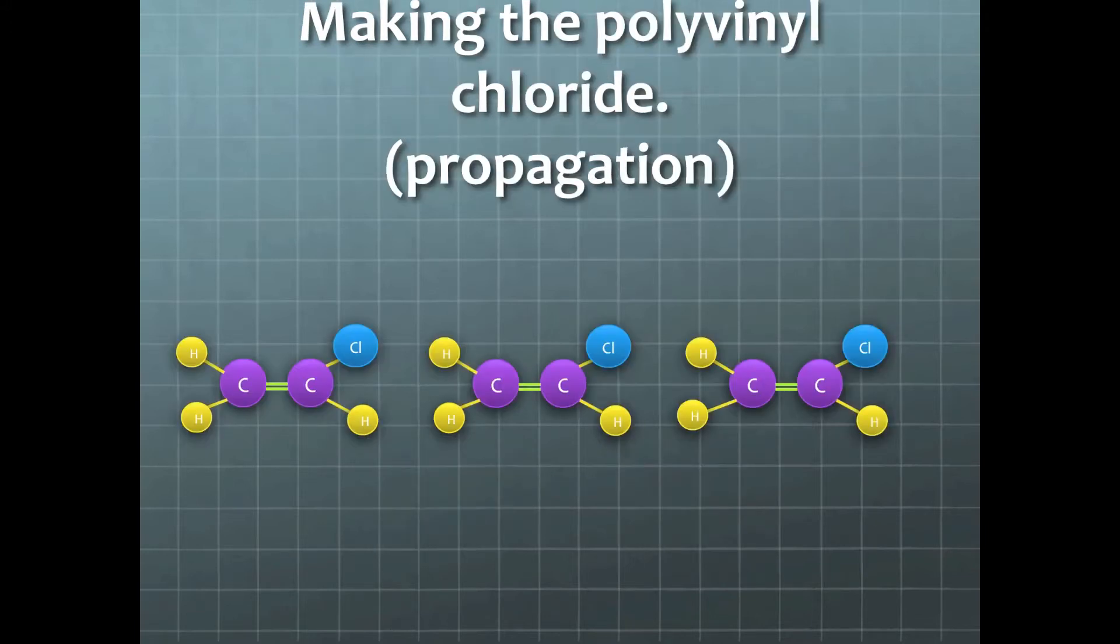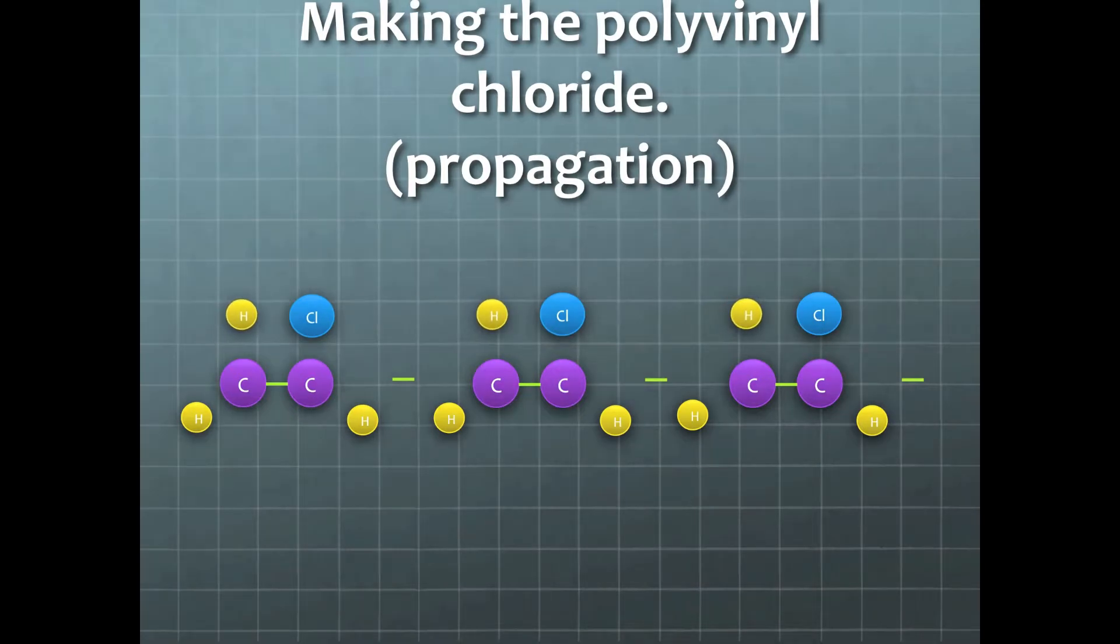Propagation. This stage is when the polymers are actually made from the monomers of vinyl chloride. This is done when the double bond is opened and the vinyl chlorides turn into polyvinyl chlorides. The chlorine and hydrogen atoms then straighten up and the chain becomes linear, and this chain growth continues.